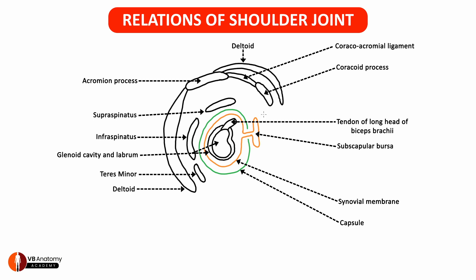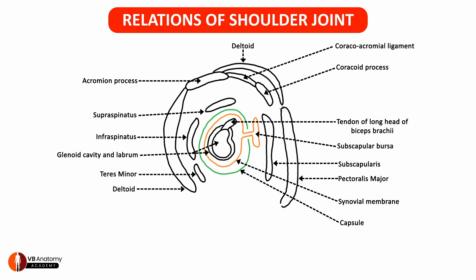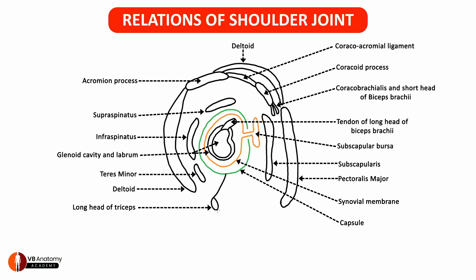In front of the subscapular bursa is the subscapularis muscle, and covering all of this is the pectoralis major muscle. Taking origin from the coracoid process is the short head of biceps and the coracobrachialis muscle. Inferiorly, the joint is related to the long head of triceps and to the teres major.